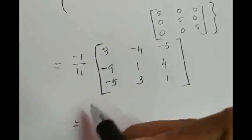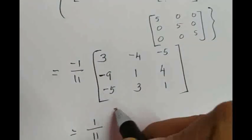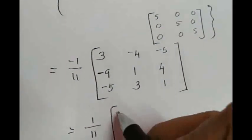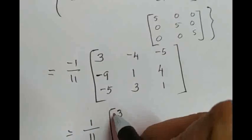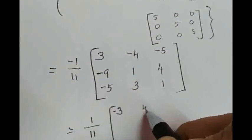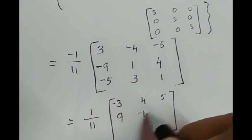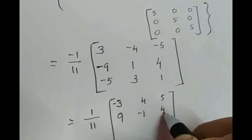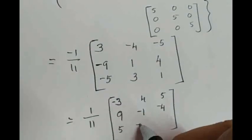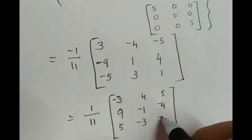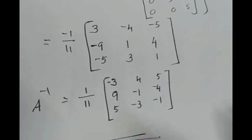Taking the negative sign into the matrix, A inverse equals 1 by 11 into: minus 3, 4, 5; 9, minus 1, minus 4; 5, minus 3, minus 1. And that will be our A inverse. Thank you.